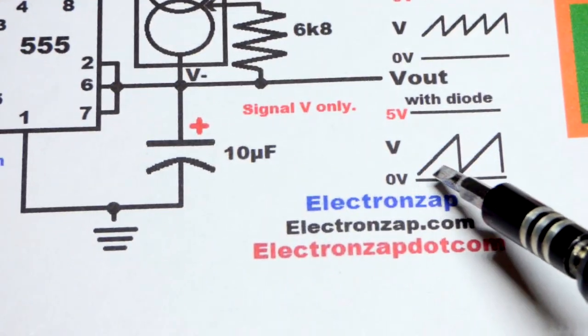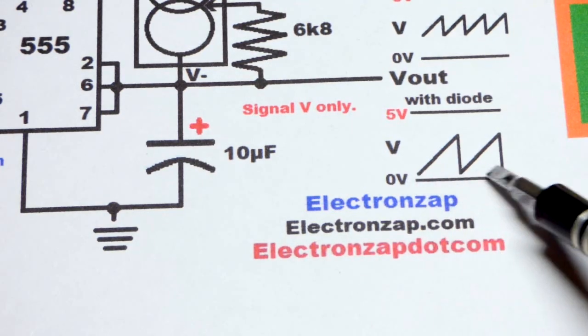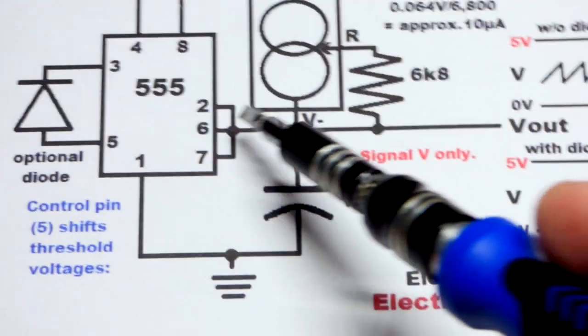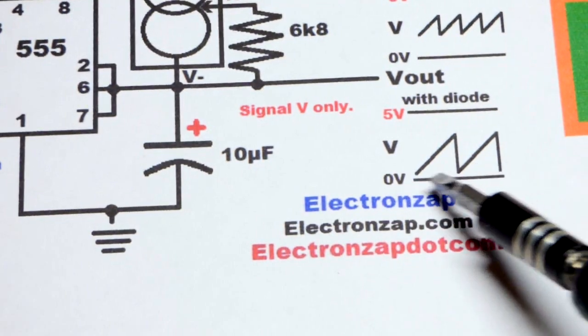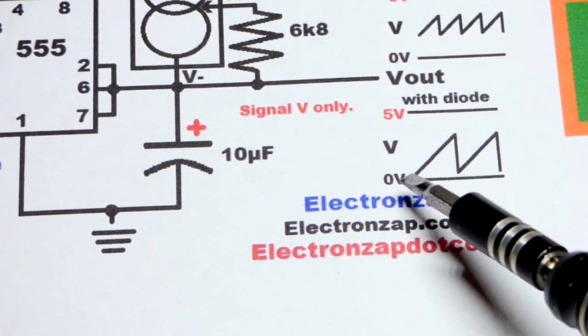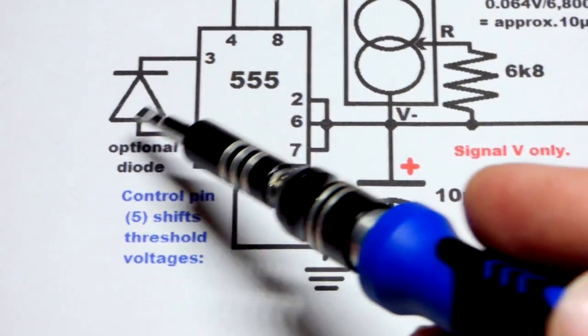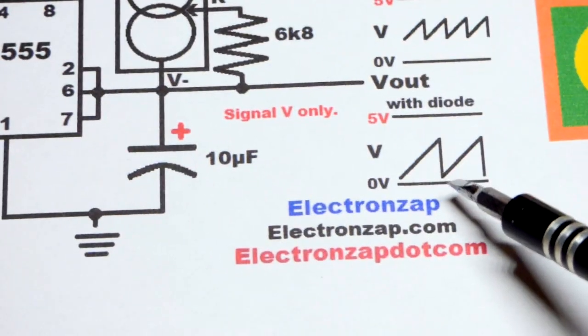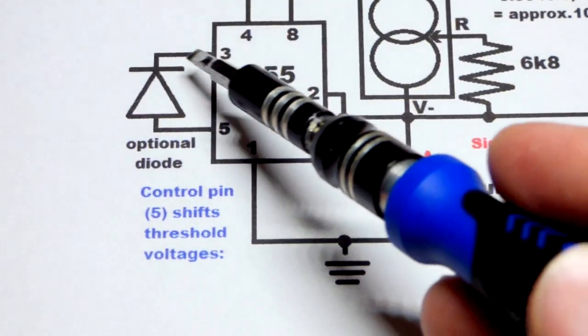As you can see, it pulls down the voltage that the trigger pin is looking for. It brings it close to ground, not all the way—probably a diode drop difference, about 0.6 volts, because you've got that diode there.